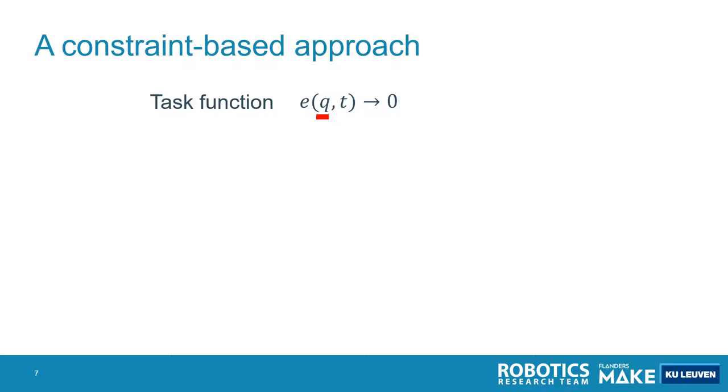This task function is a function of a number of variables representing the state of the system. In our approach this can be robot joint variables, but can also be feature variables. I will discuss these feature variables later. So Q are both joint variables and feature variables.